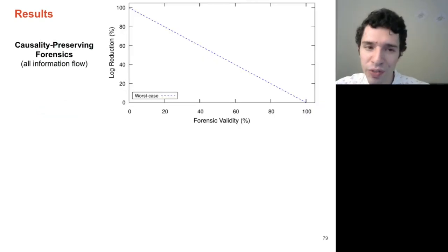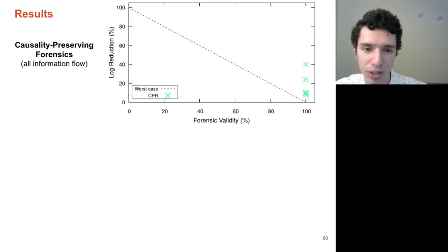We can gain a bit more of an insight into the goals of these reduction techniques if we plot the causality-preserving metrics. Causality-preserving reduction ensures that all information flow in the approximated graph is kept, and therefore achieves perfect forensic validity while also achieving between 8 to 43 percent of log reduction rates.